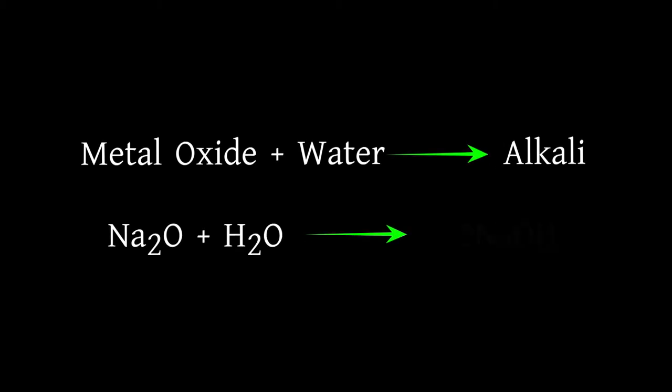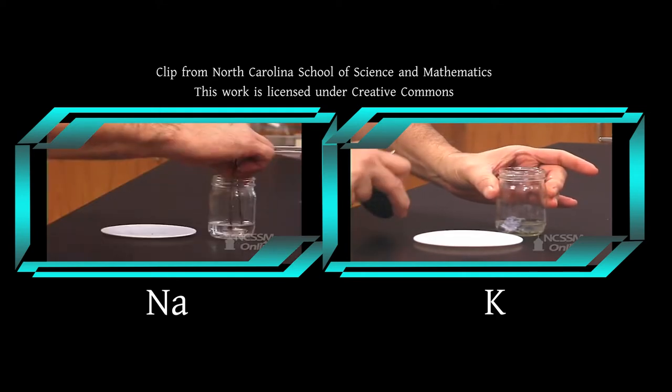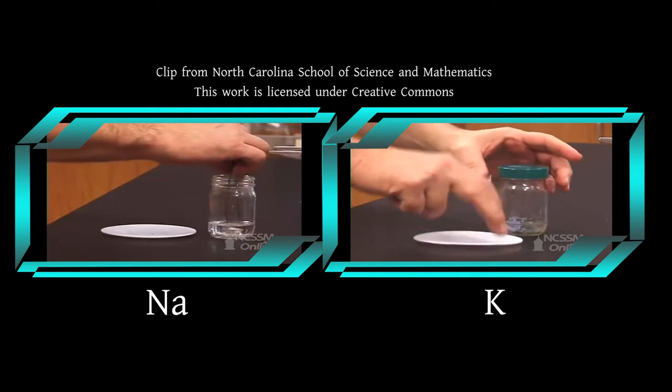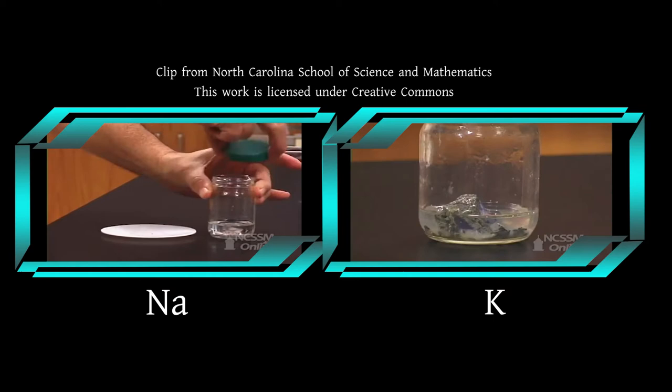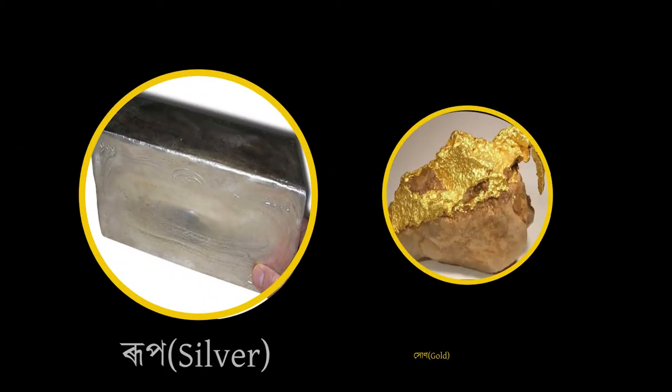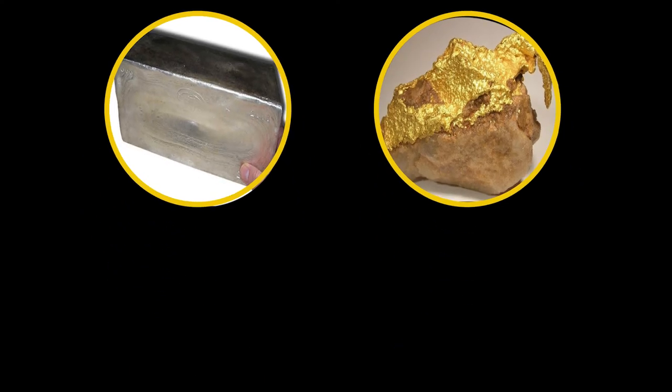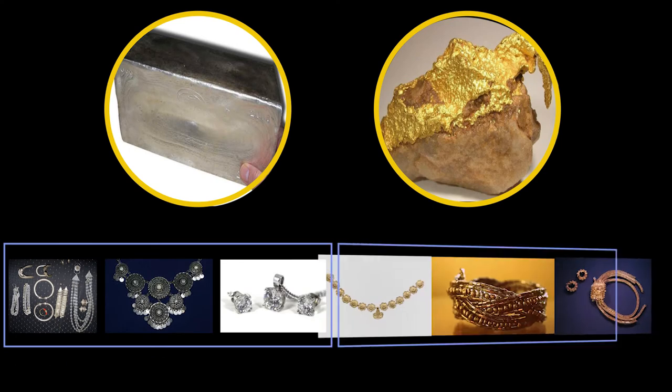Metals like sodium and potassium react vigorously with oxygen. To prevent accidental fire, they are kept immersed in kerosene oil. On the other hand, metals like silver and gold never react with oxygen even at higher temperature. This is why they are used in manufacturing of ornaments.